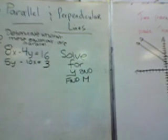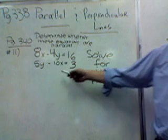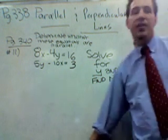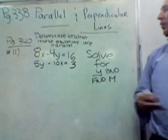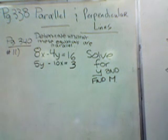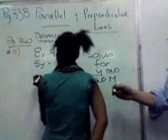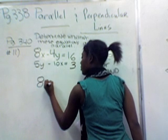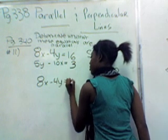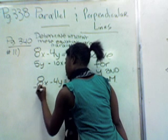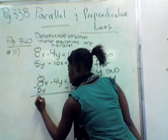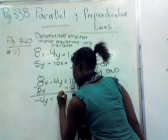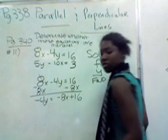Alright, so we'll go back to the equation at hand. 8x minus 4y equals 16, and 5y minus 10x equals 3. So what do we do to find the slope given equations? Chiara, what's our first step? Jessica? Okay, so what you do is you subtract 8x. Good, subtract 8x on both sides. And why do you want to get rid of 8x? Because we're solving for y, so we want to take the 8x onto the other side. And we get negative 4y equals negative 8x plus 16. Good.